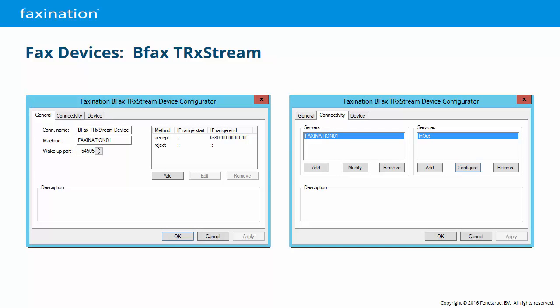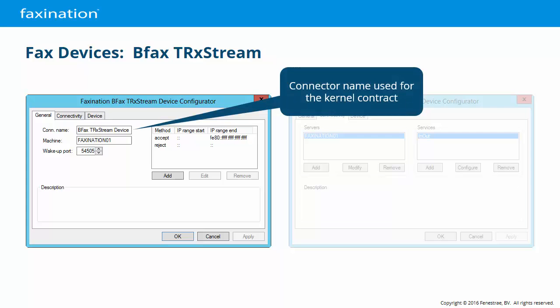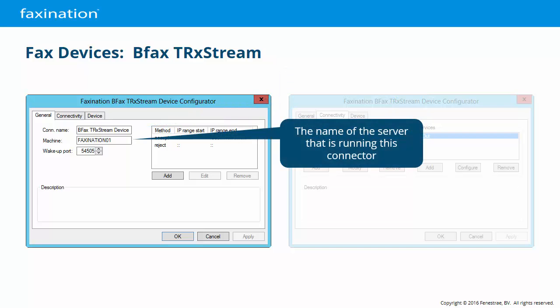The General tab and Connectivity tab are the same for all fax device connectors. The connector name is used in the contract between the kernel and this device connector — a security feature ensuring only authorized connectors can talk to authorized kernels. The contracts are created automatically during initial install and add/remove operations, and normally do not need to be modified manually. Machine is the domain name of the server running this connector; if domain name resolution is a problem, this can also be an IP address.